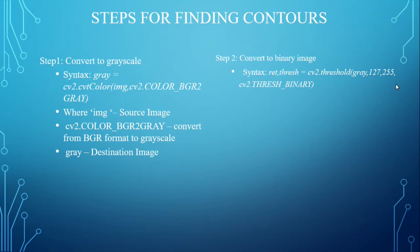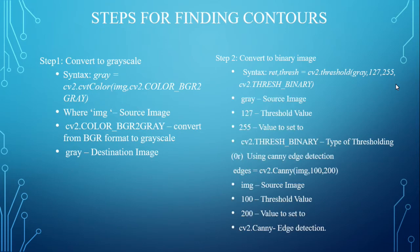Step 2 syntax: ret, thresh = cv2.threshold(gray, 127, 255, cv2.THRESH_BINARY), where gray is the source image obtained earlier, 127 is the threshold value, 255 is the maximum value, and cv2.THRESH_BINARY is the type of thresholding. There are several types like THRESH_BINARY_INV, which you can find in the OpenCV docs.